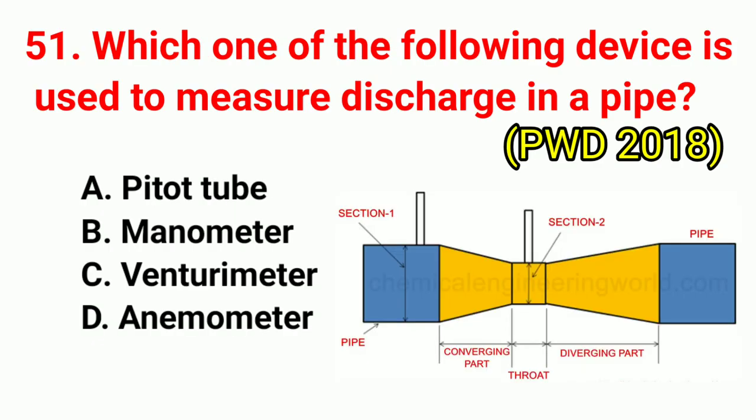Question No. 51. Which one of the following devices is used to measure discharge in a pipe? Correct answer is option C: venturimeter.